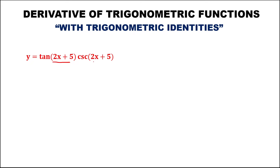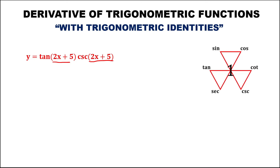For the next given, since the angles are the same, we check for an identity. Multiplying these two functions — tangent times cotangent — the middle function is secant. So we can reduce this given as y equals secant 2x plus 5.